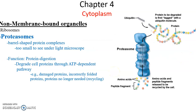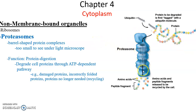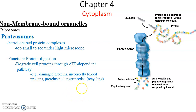Proteasomes are another kind of large protein complex found in the cytosol. Their job is to break down other proteins — essentially protein digestion. Proteasomes act like a shredder: a protein goes in one end and amino acids and peptide fragments come out the other end. This is a way to get rid of damaged proteins or proteins that the cell no longer needs.